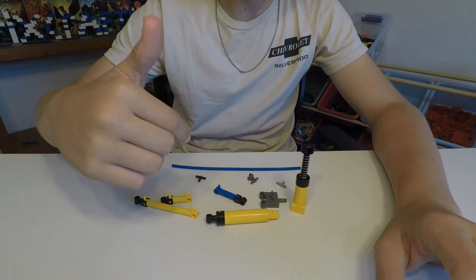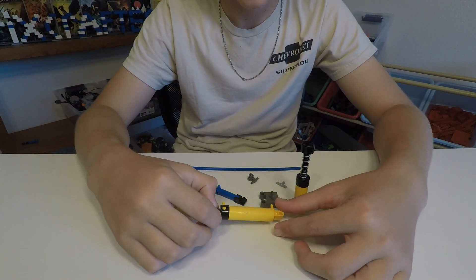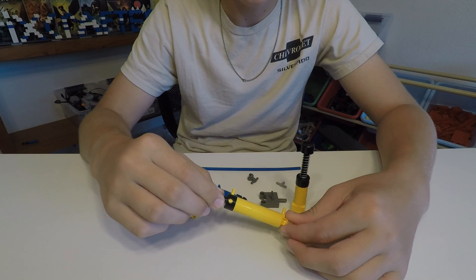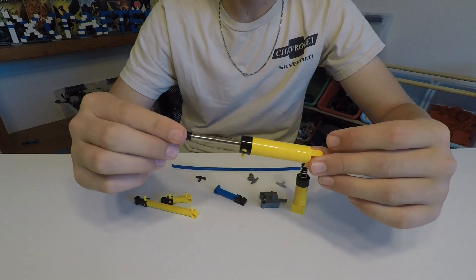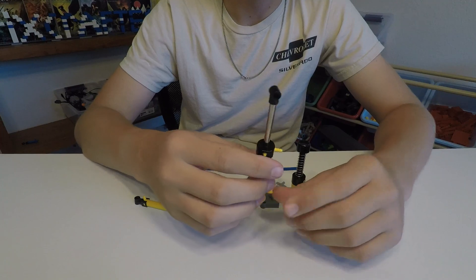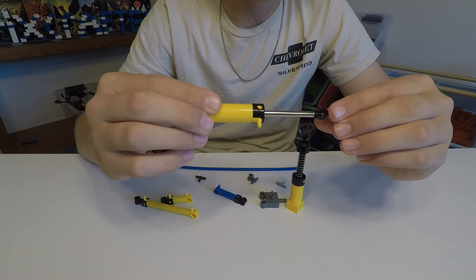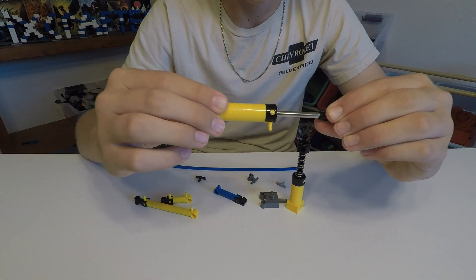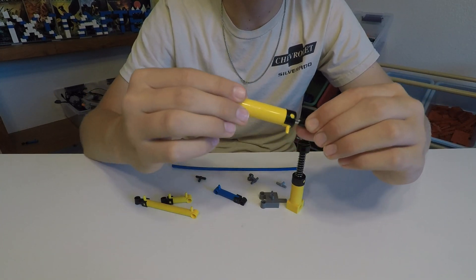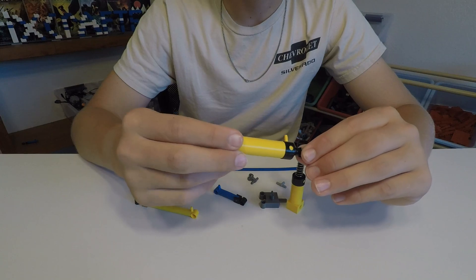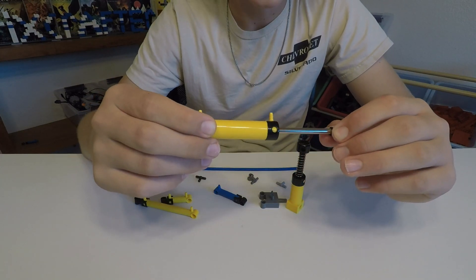Now I'm going to show you all the different pistons and other parts that come with the Pneumatics set. This is the biggest piston. It's got a very large chamber in here, and it takes up the most air and it's the strongest out of all of them, so you can use this on things like a crane or something that you really need strength.